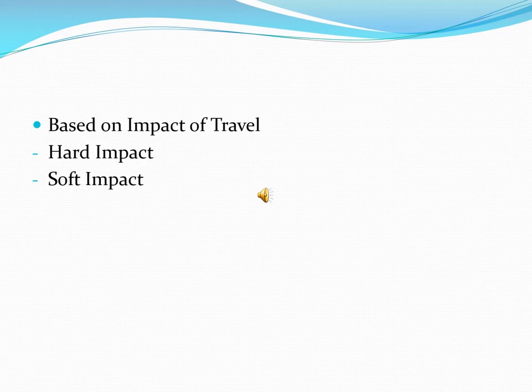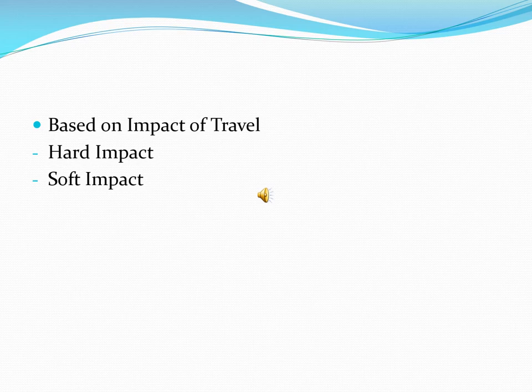Tourism based upon impact refers to the effect that travel and tourism has on a region. Hard-impact tourism is where too many tourists come in, with heavy infrastructure development for tourism, largely at popular destinations. Soft-impact tourism is where fewer people go and little infrastructure has been developed, typically in peripheral regions. Hard-impact tourism is related to mass tourism, while soft-impact tourism is related to sustainable or alternate tourism.